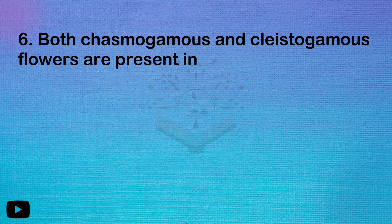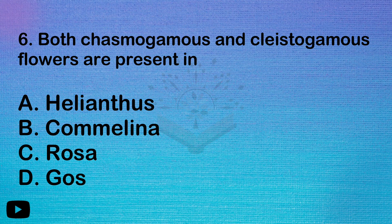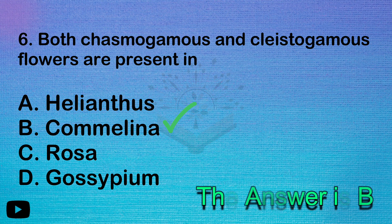Next question — that is a direct NCERT question. Both chasmogamous and cleistogamous flowers are present in — if you have the correct answer, this is a direct NCERT question. Option B: Commelina.